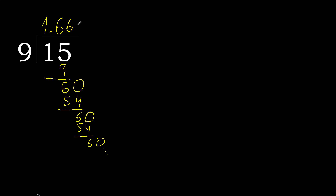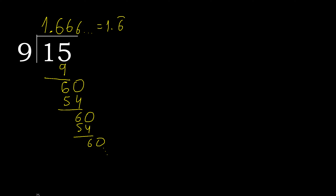Repeat, therefore 6 repeats. Therefore, 15 divided by 9 is — after the point: 6 repeating. Therefore, like this. Ok, equal.